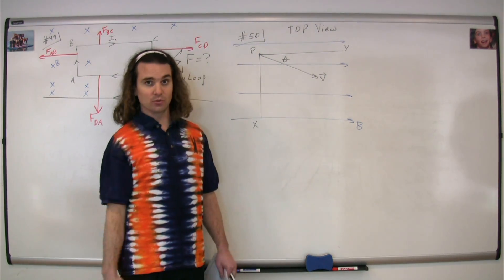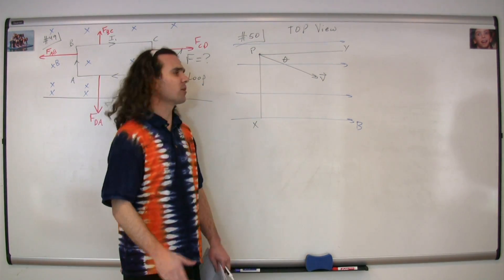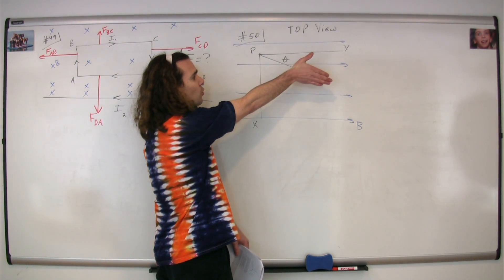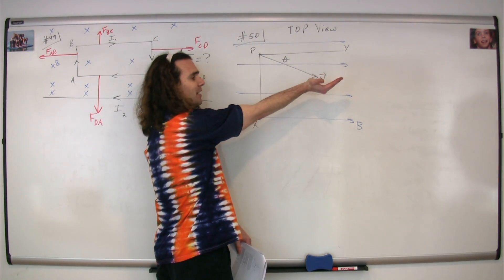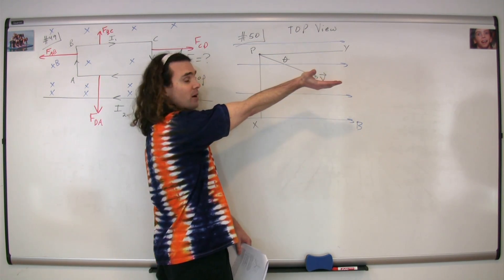Now, we get to use the right-hand rule. We're trying to figure out the shape of the path of the particle. We take our fingers, point them in the direction of the velocity, curl our fingers in the direction of the magnetic field, which is just a little bit, looks like this, and our thumb points out of the board or out of the page.